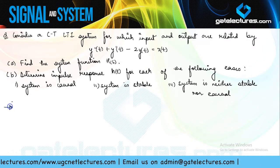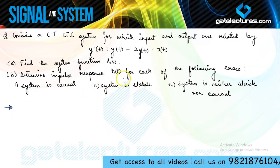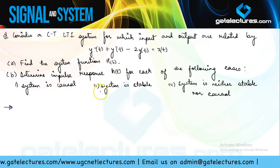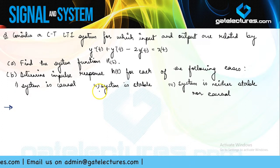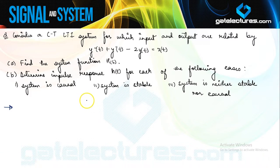Now look at the next question. They have given a continuous time LTI system described by an LCCDE — a differential equation describing the system. They require you to find the system function H(s) and determine the impulse response h(t) for three different conditions. The impulse response h(t) will be different depending on the different ROCs of H(s). The number of different inverse Laplace transforms possible equals the number of ROCs, which equals the number of distinct poles plus one.